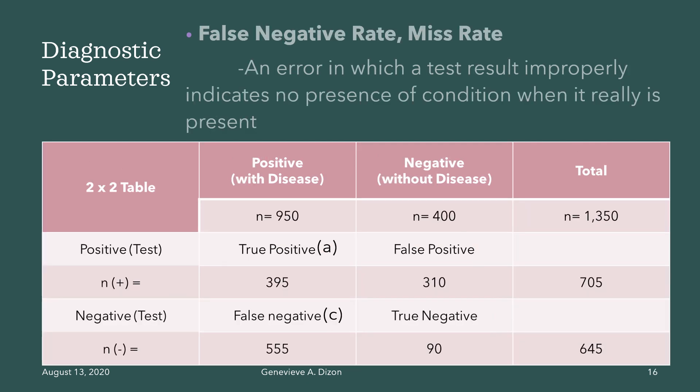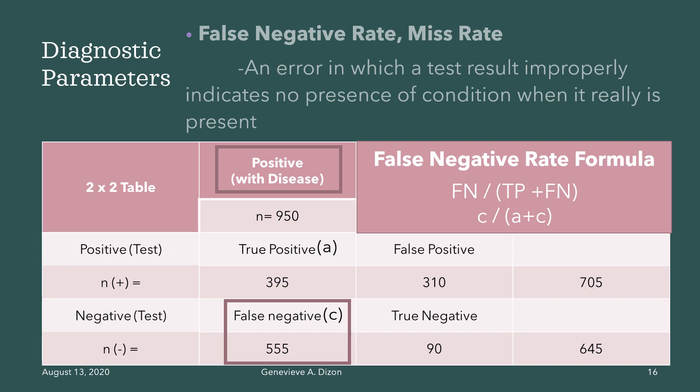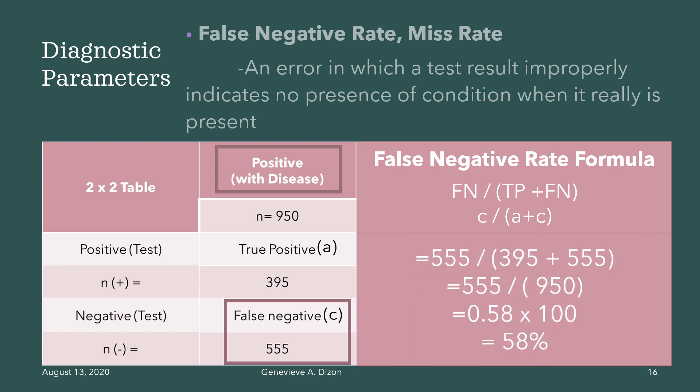The false negative rate is also known as the miss rate. This is an error in which a test result improperly indicates the absence of a condition when the disease is really present. The formula is false negative divided by true positive plus false negative, or C divided by A plus C. The values are 555 divided by 950, multiplied by 100, giving 58%. This means the test can give a 58% chance of giving a false negative result.